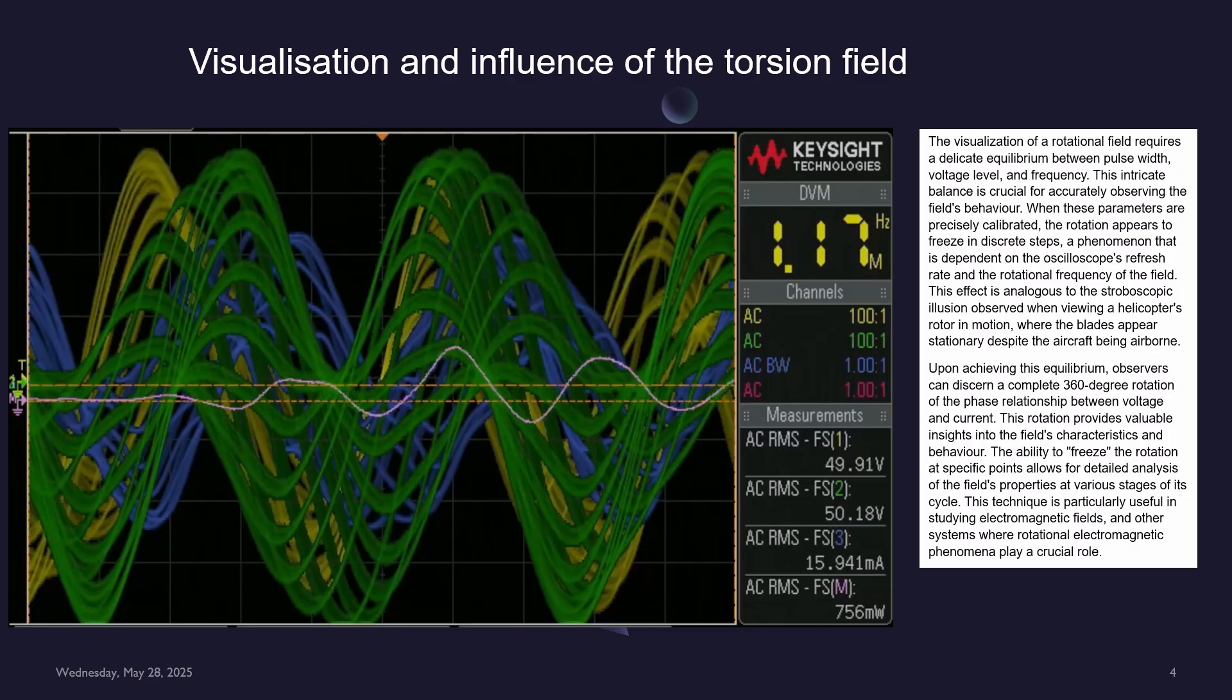This effect is analogous to the stroboscopic illusion observed when viewing a helicopter's rotor in motion where the blades appear stationary despite the aircraft being airborne. Upon achieving this equilibrium, observers can discern a complete 360-degree rotation of the phase relationship between voltage and current.